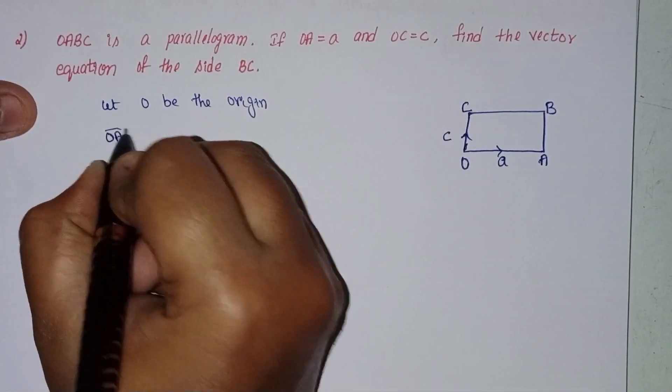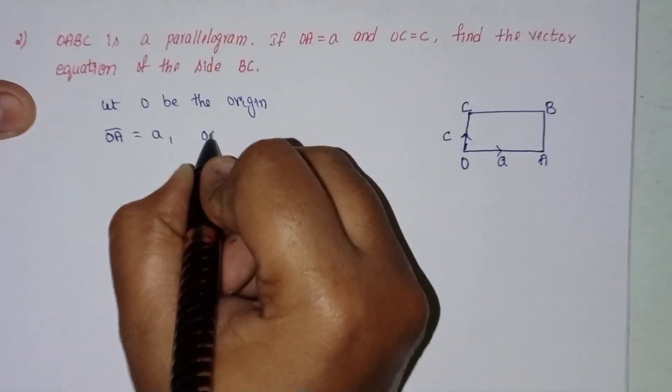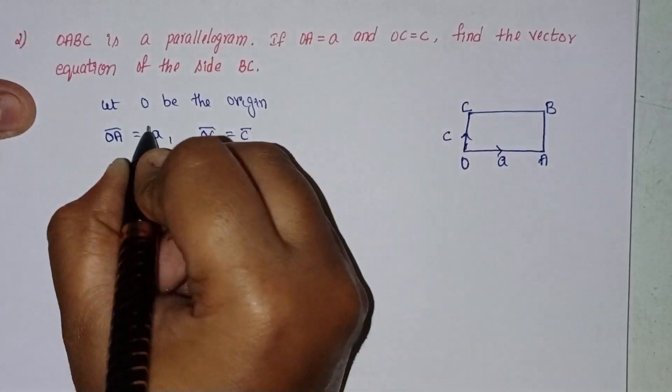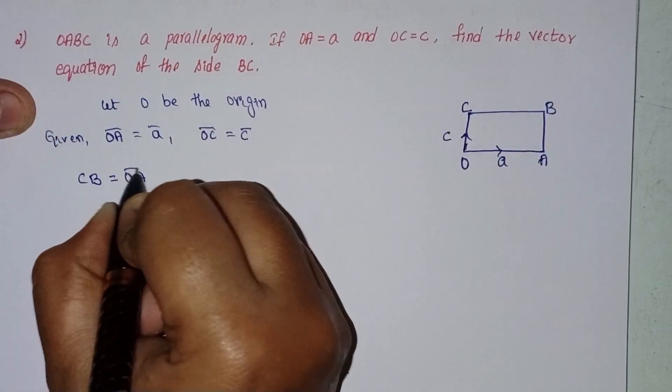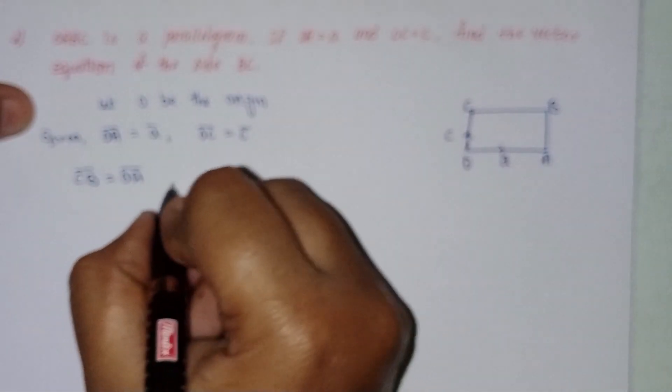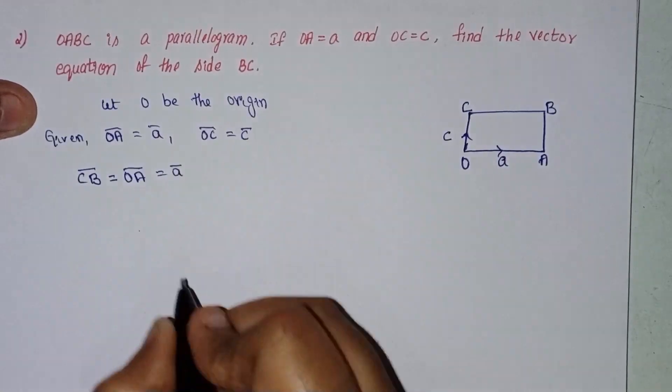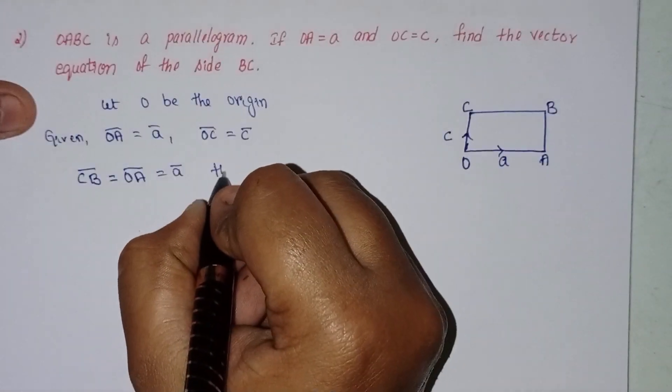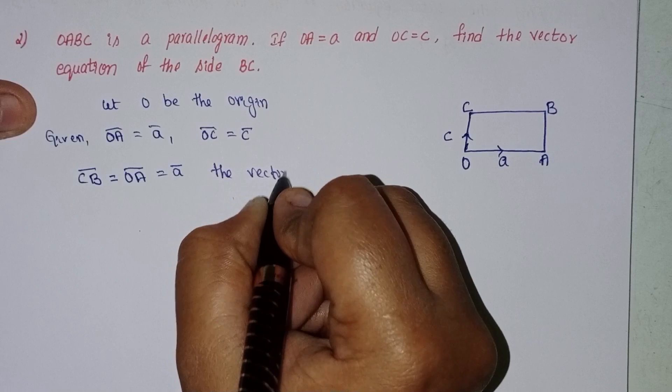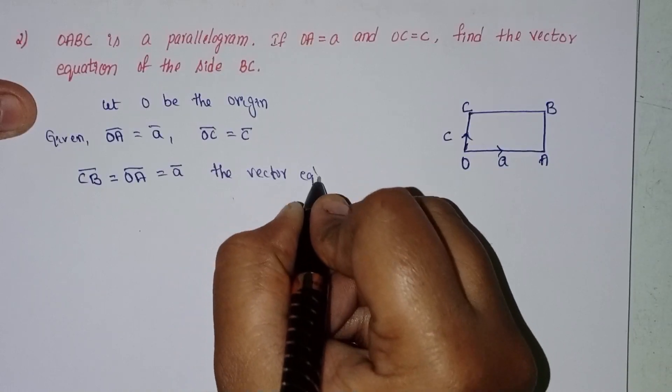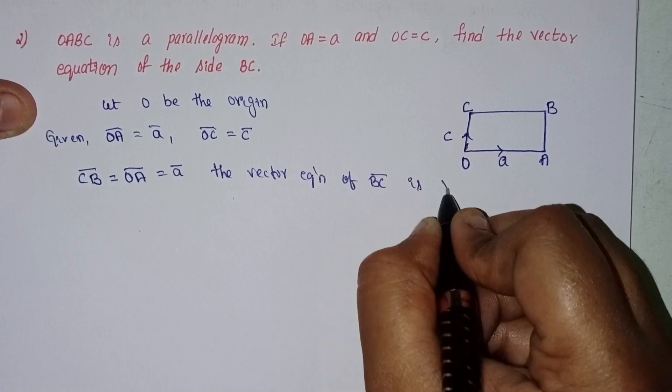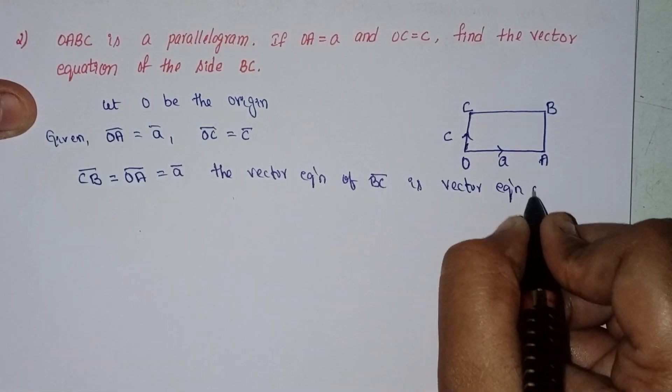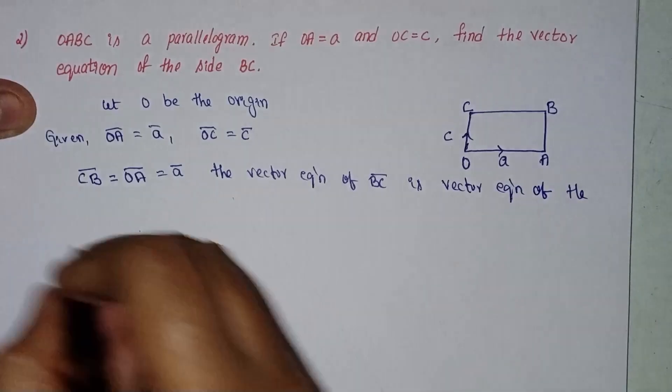Since OA equals a and OC equals c, we have CB equals OA. That means CB equals a. The vector equation of BC is the vector equation of the